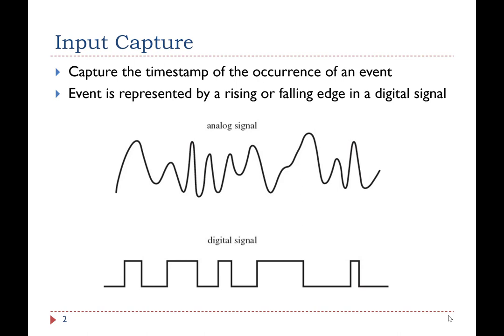By obtaining the timestamps of two events, software can calculate the time duration. Let's look at a simple example.